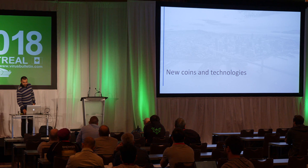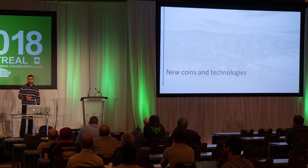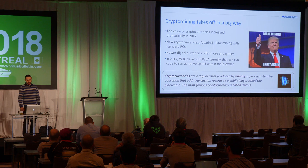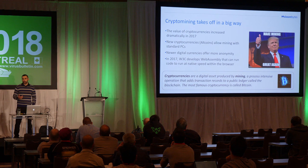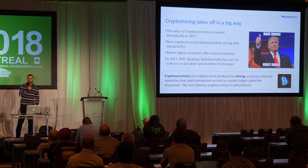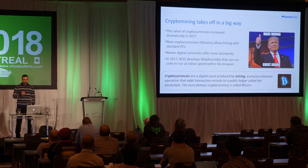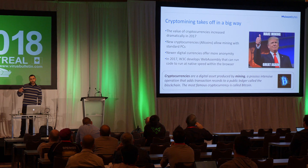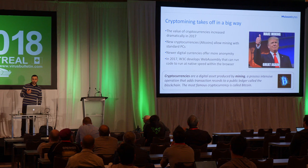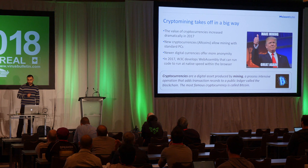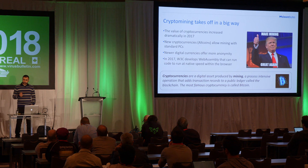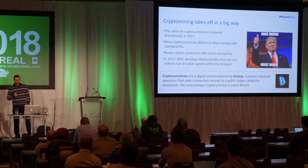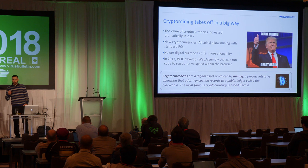In the last few years, there have been a lot of developments with cryptocurrencies and technologies, and crypto mining has really taken off. Bitcoin mining has been going on for many years, but it's become so difficult to mine that only particular farms with particular hardware can do it. In 2017, the value of Bitcoin skyrocketed to almost $20,000, and that led to a lot of other cryptocurrencies — known as altcoins — also gaining value. A big difference is that those currencies can be mined on average computers, and they also offer better anonymity, which is something criminals obviously like. Also in 2017, W3C developed the WebAssembly technology that allows code to run at native speed within the browser.